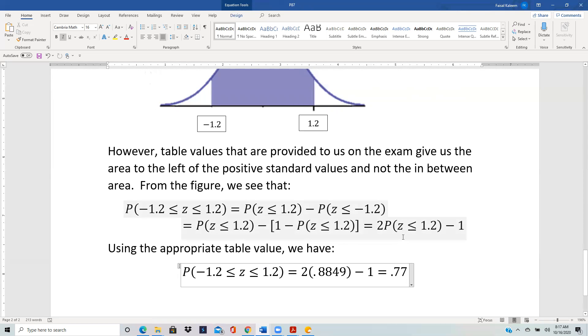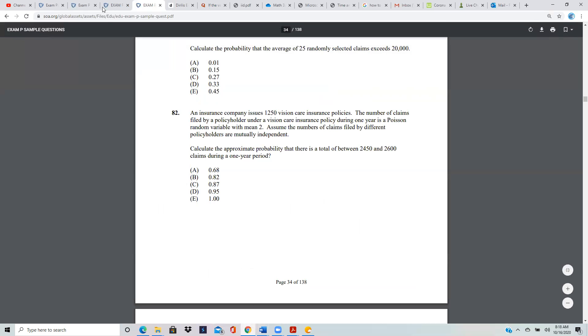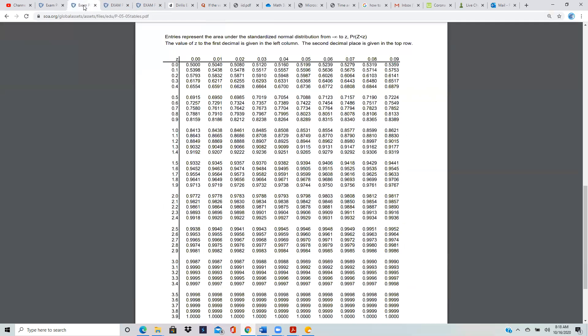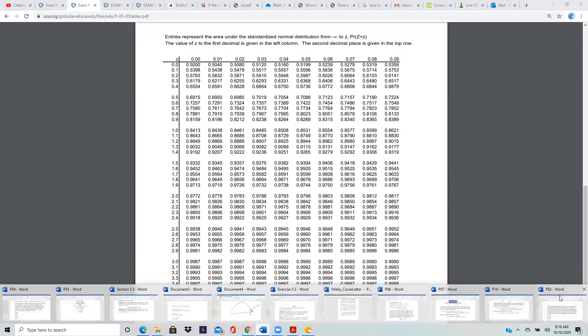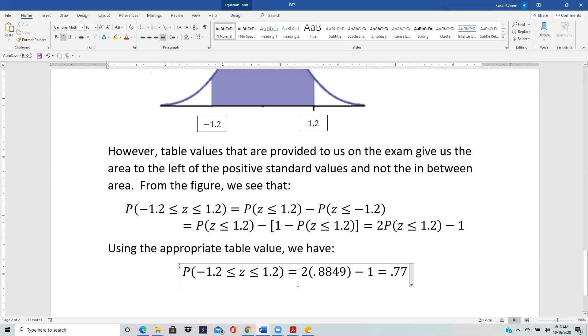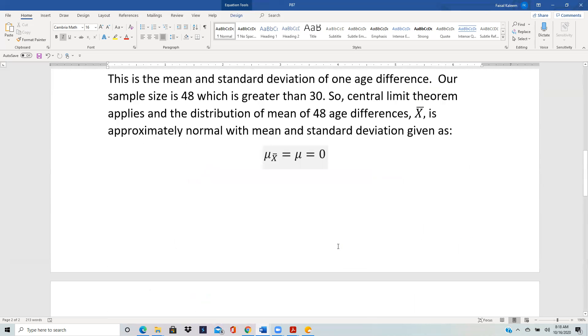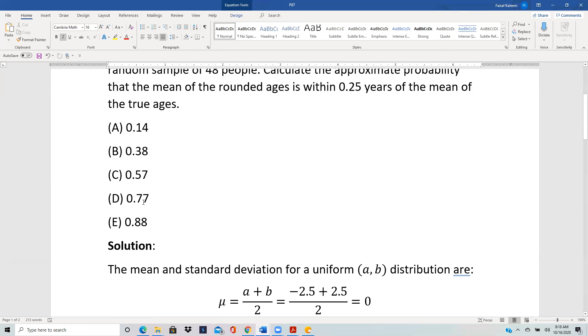From the tables, we can see that the cumulative probability of 1.2 is 0.8849. So 2 times 0.8849 minus 1 is 0.77, which is choice D.